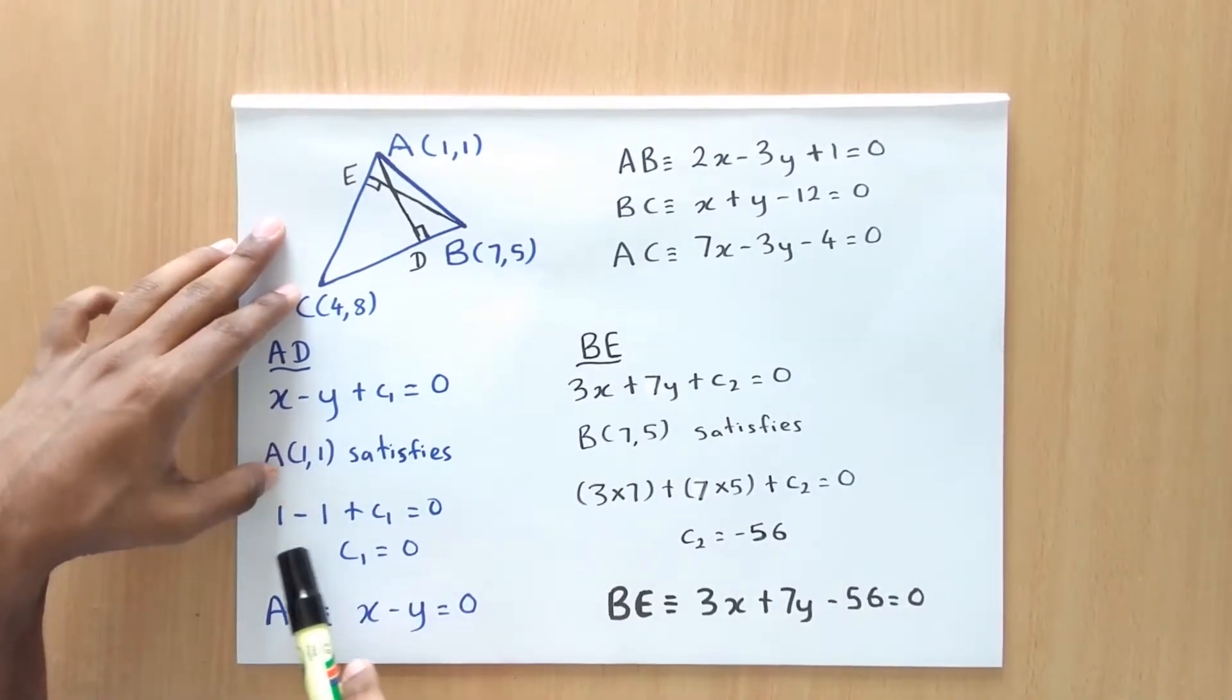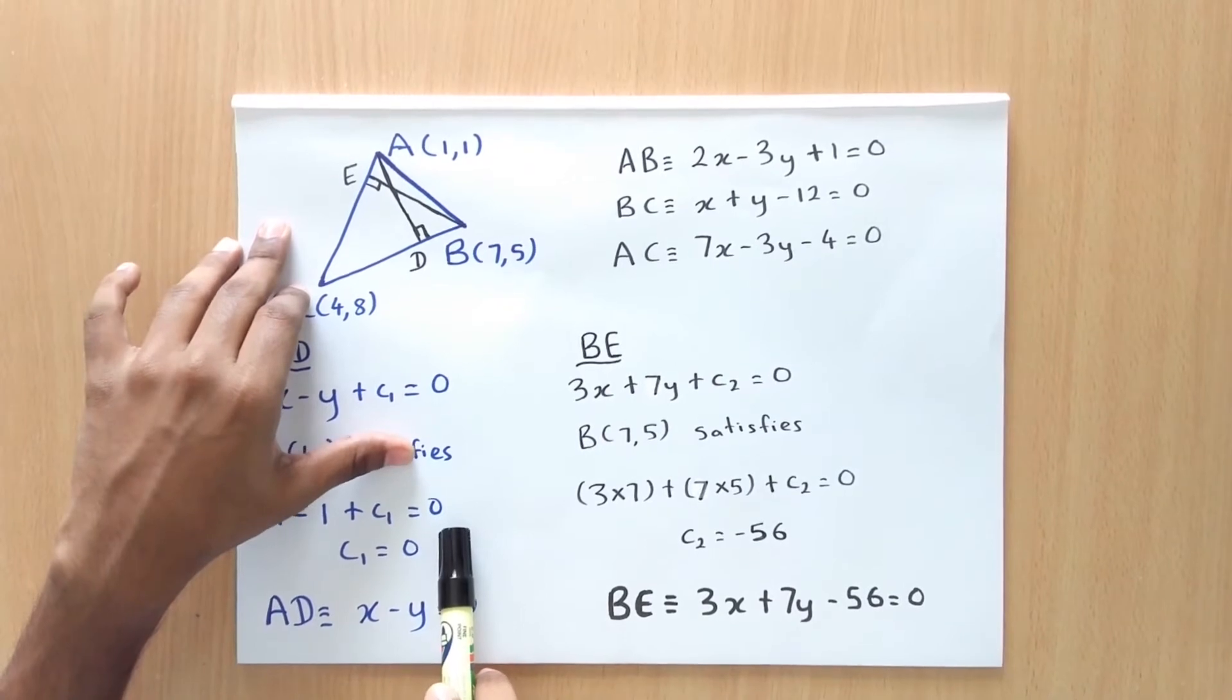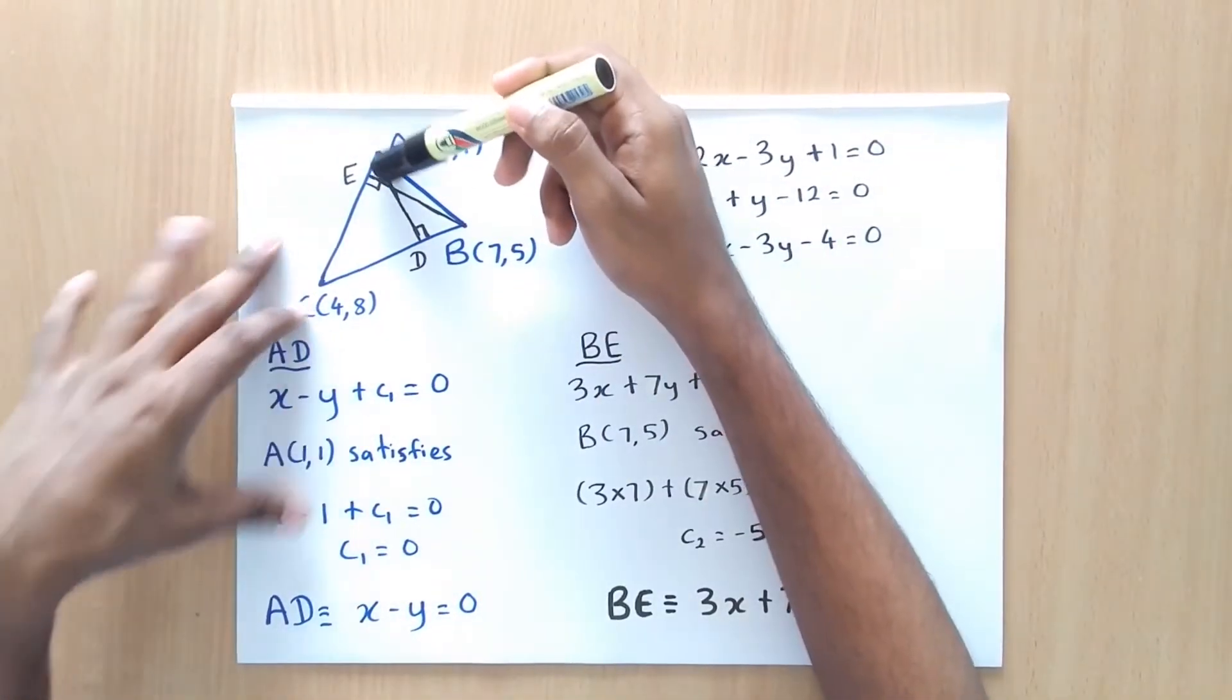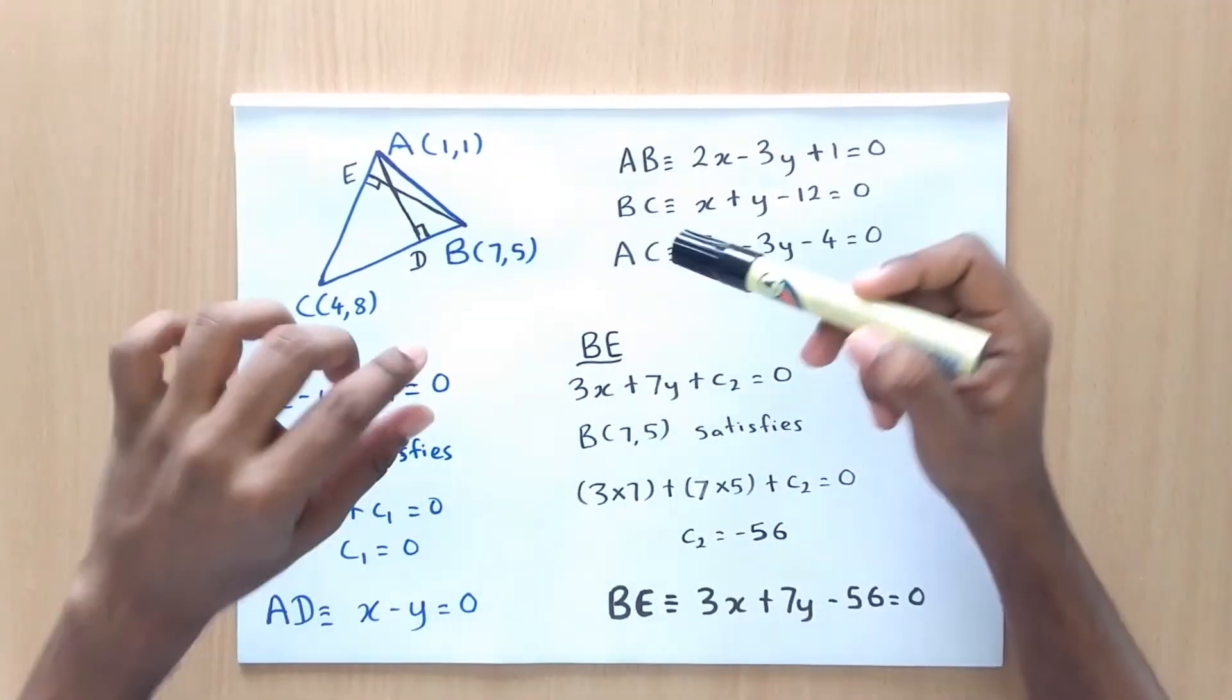So when we substitute, we get 1 minus 1 plus C1 equals 0. We get C1 equals 0. So then the equation of AD can be written as x minus y equals 0.